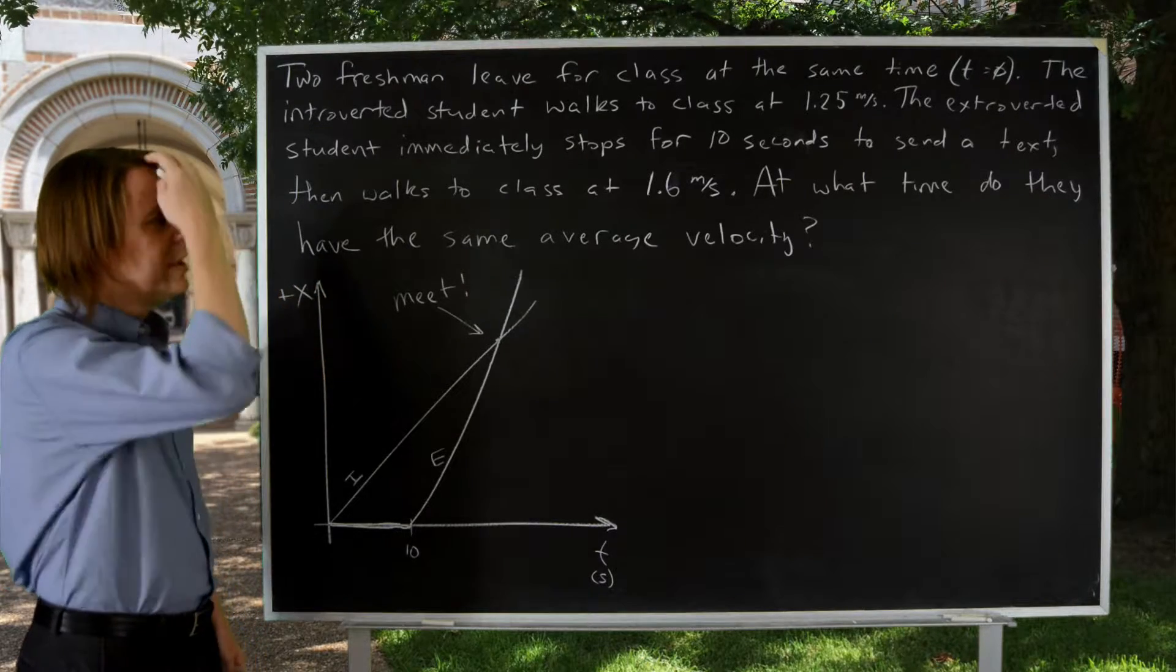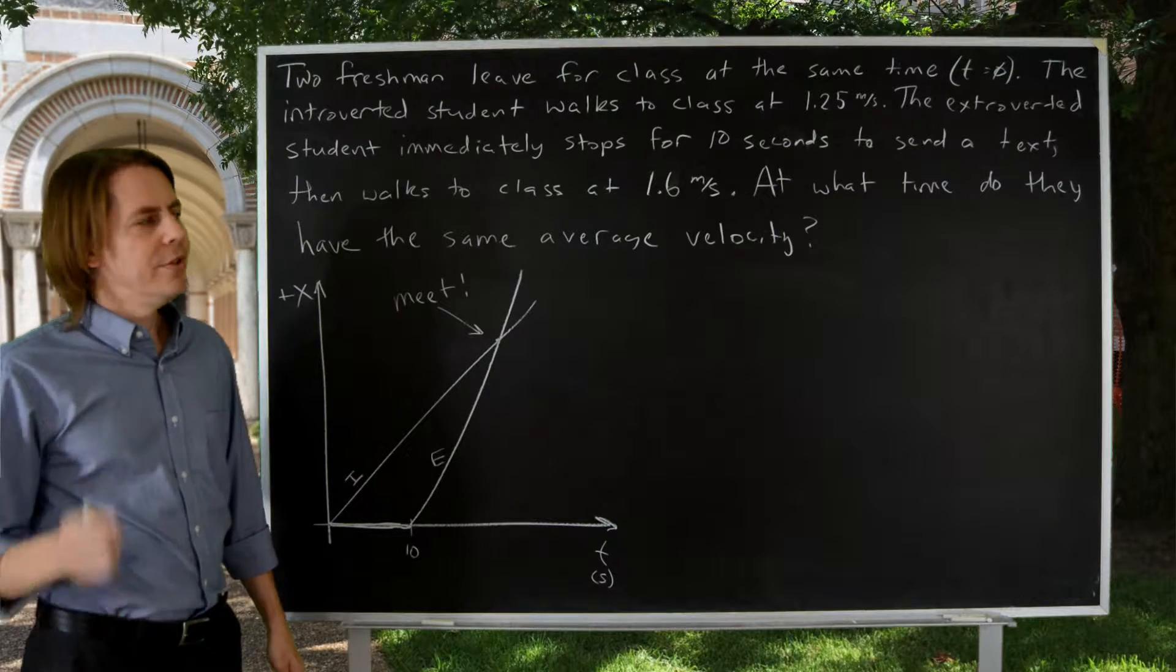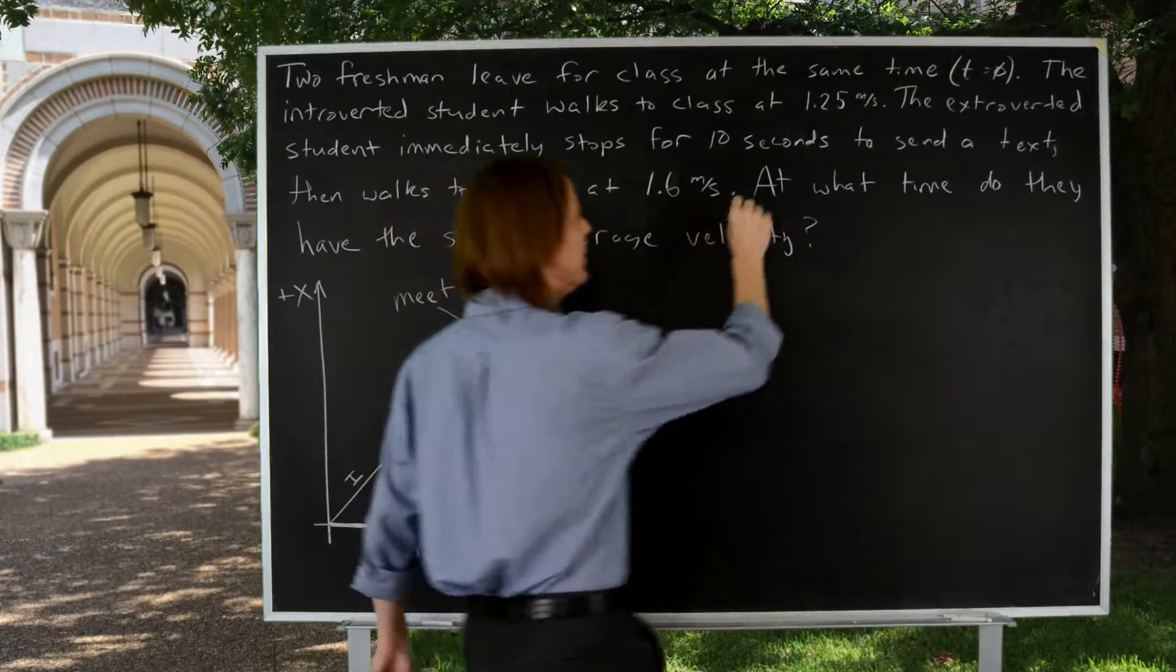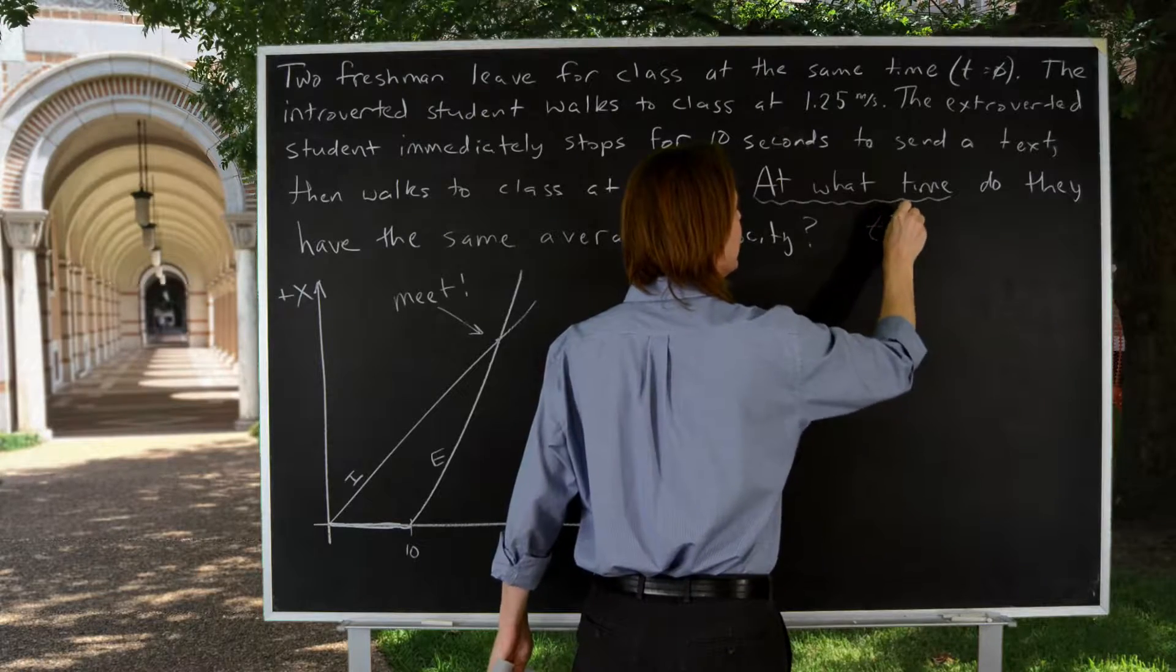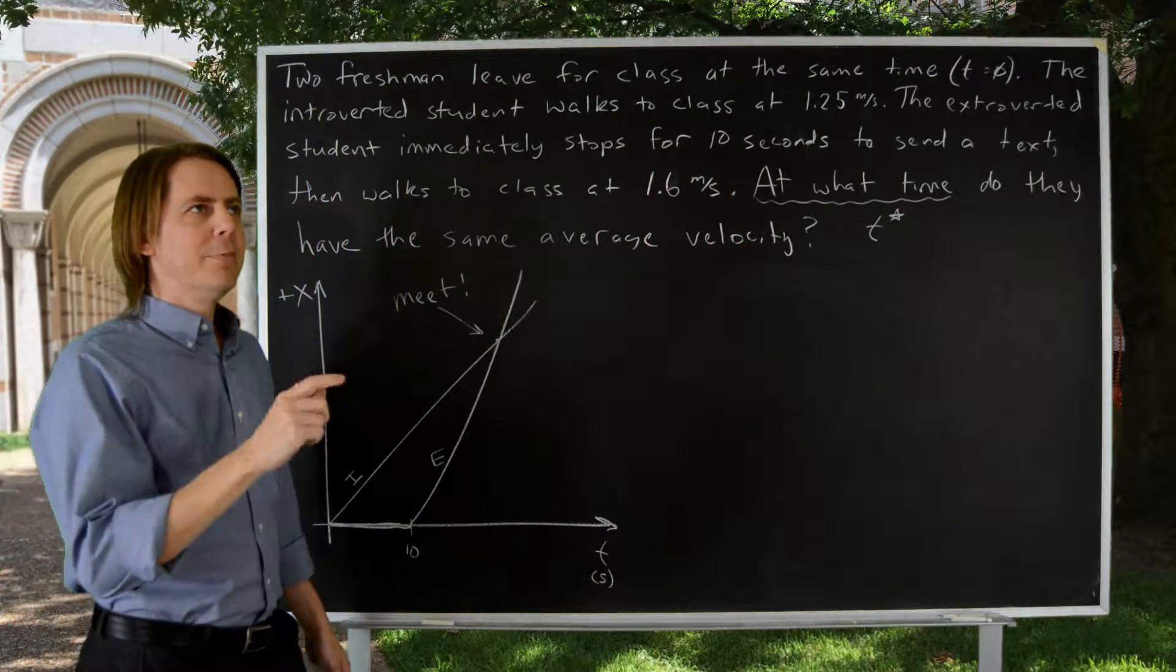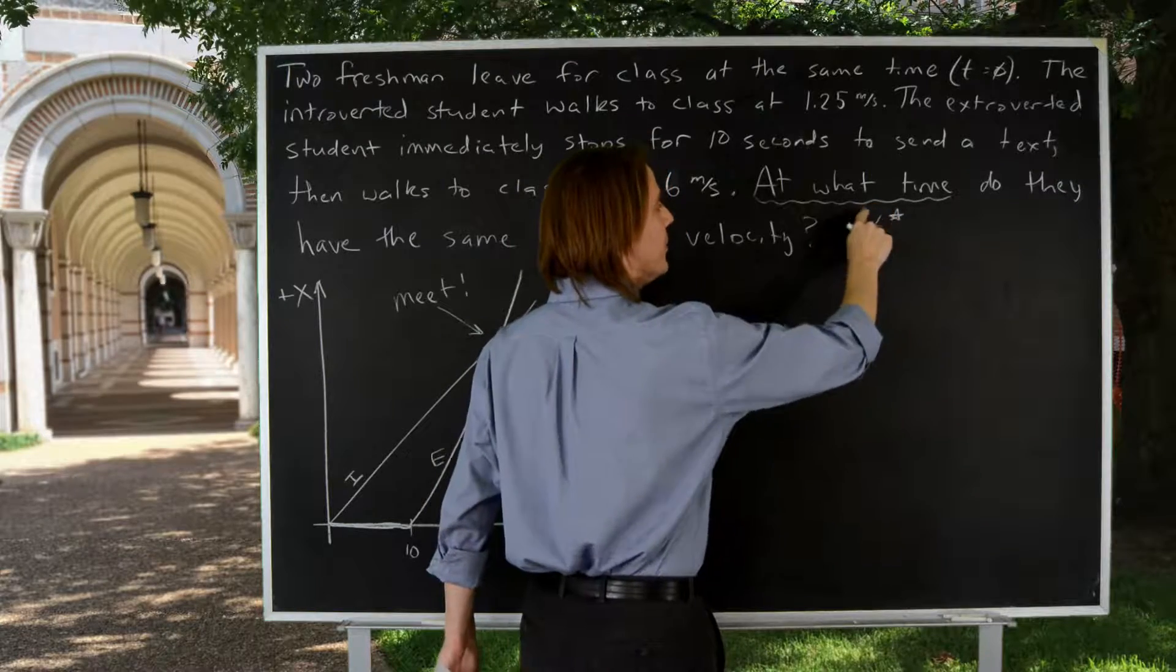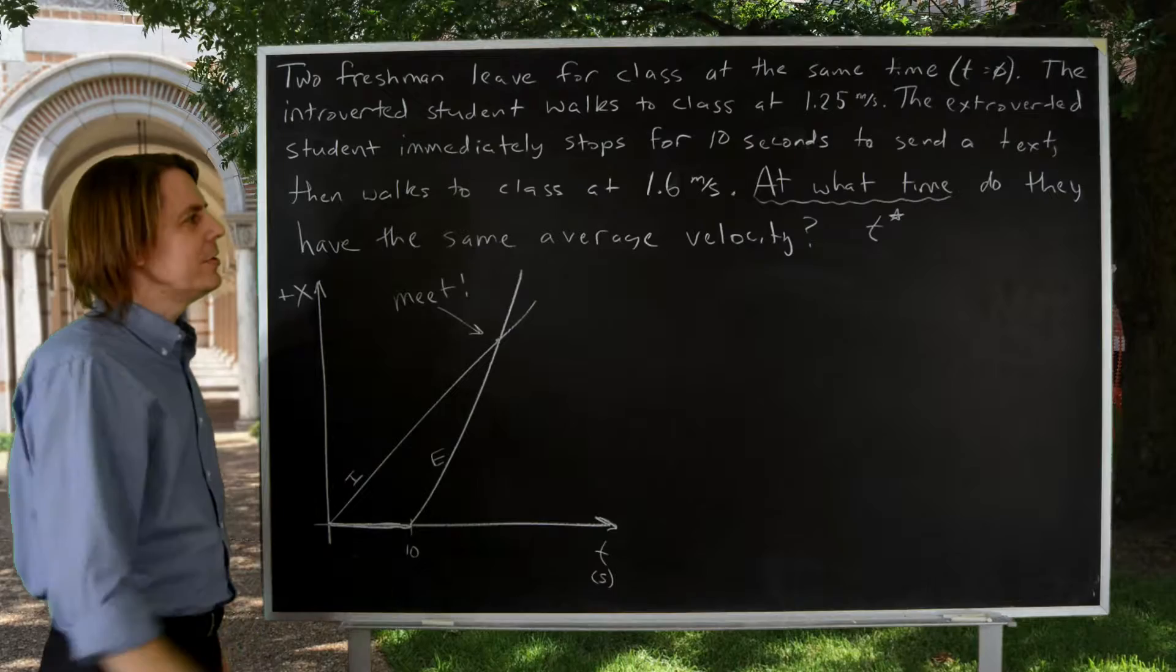Now let's look at the question, at what time do they have the same average velocity? This is another thing to look for in these problems. If you're asked for a specific time, what I like to do is give that a specific label. At what time, we're going to call that t star, because it can be important not to mix up the independent variable t with this new variable that has a specific value, t star, that you're solving for.